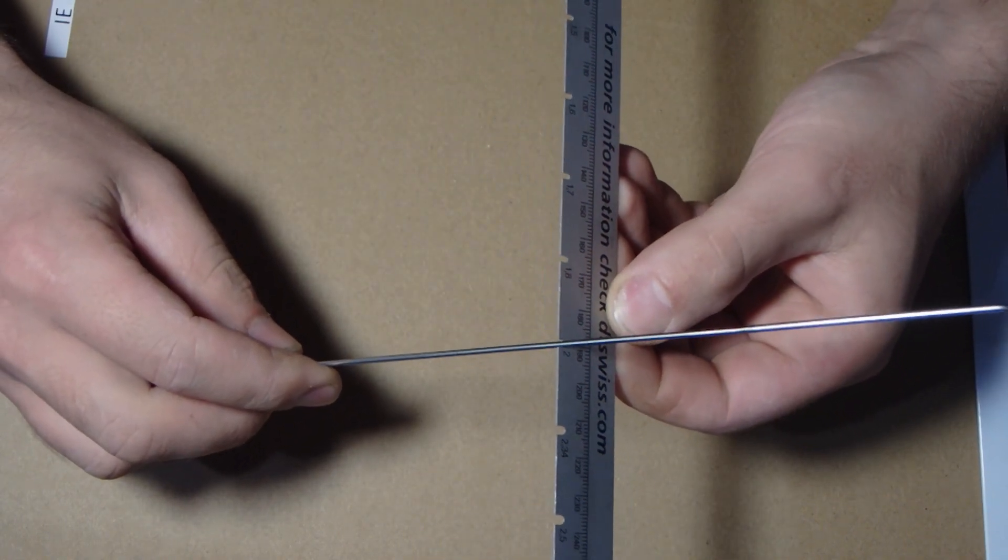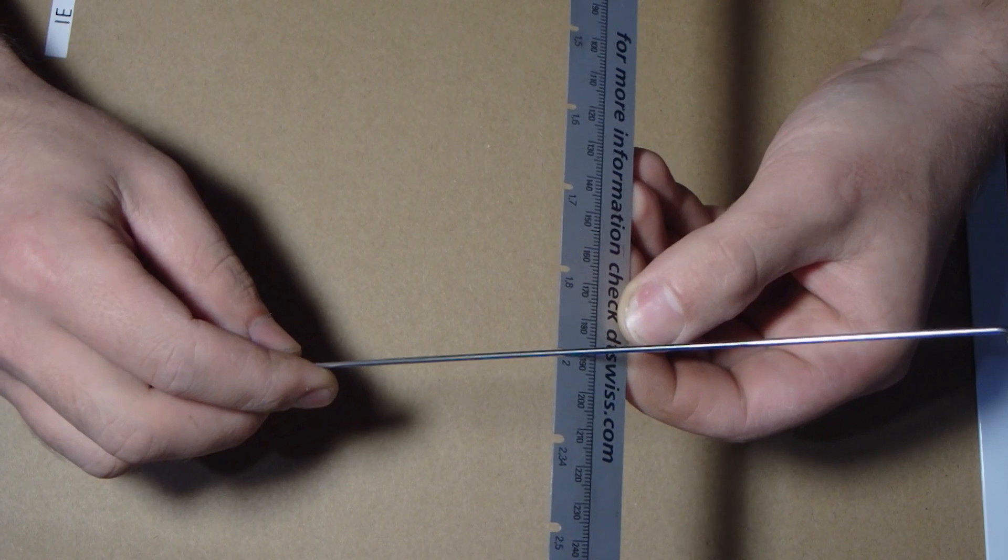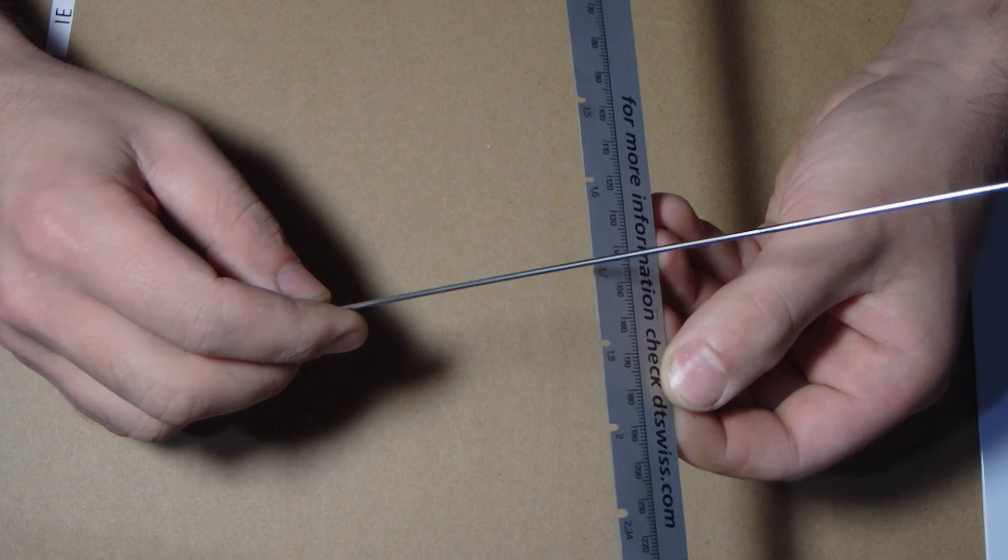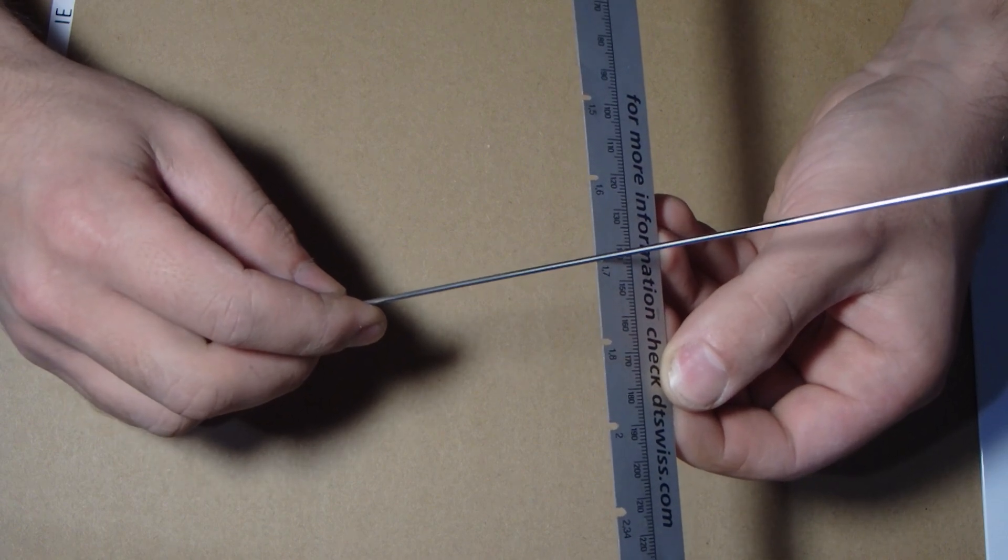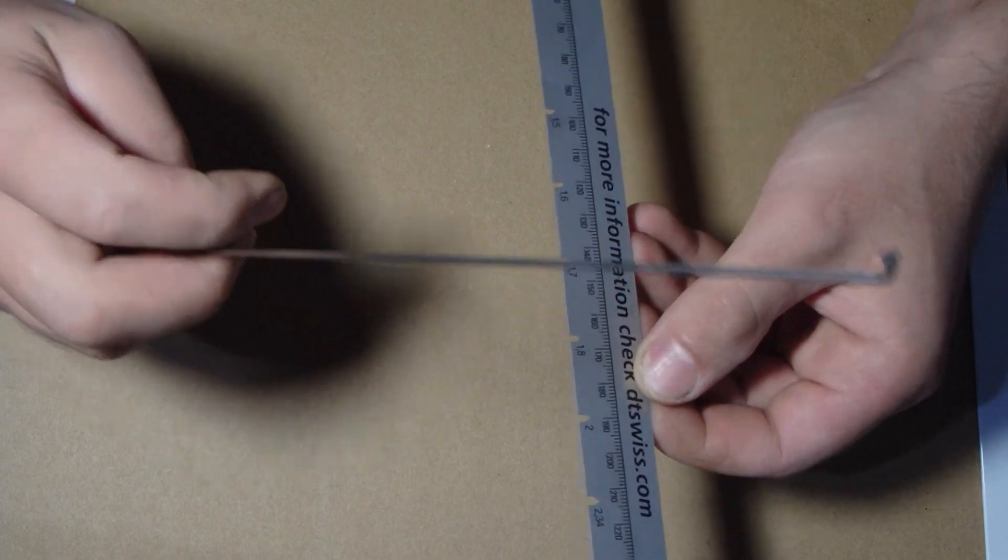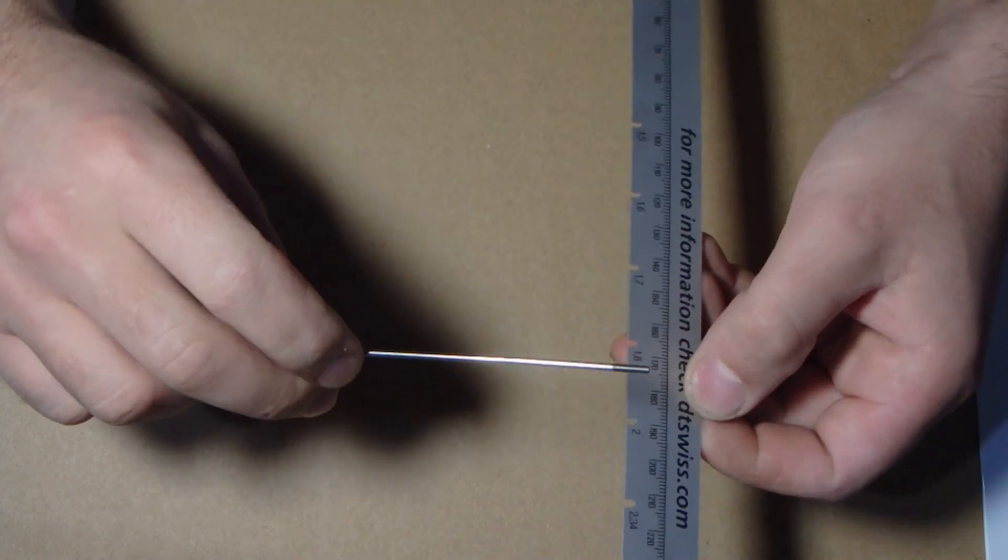So again 2mm feels like it's got a bit of float to it so we'll try a size smaller. 1.8 seems about right but we'll try a size smaller just to rule it out, and it doesn't fit in the 1.7 size, which means this spoke has a 1.8 center section.